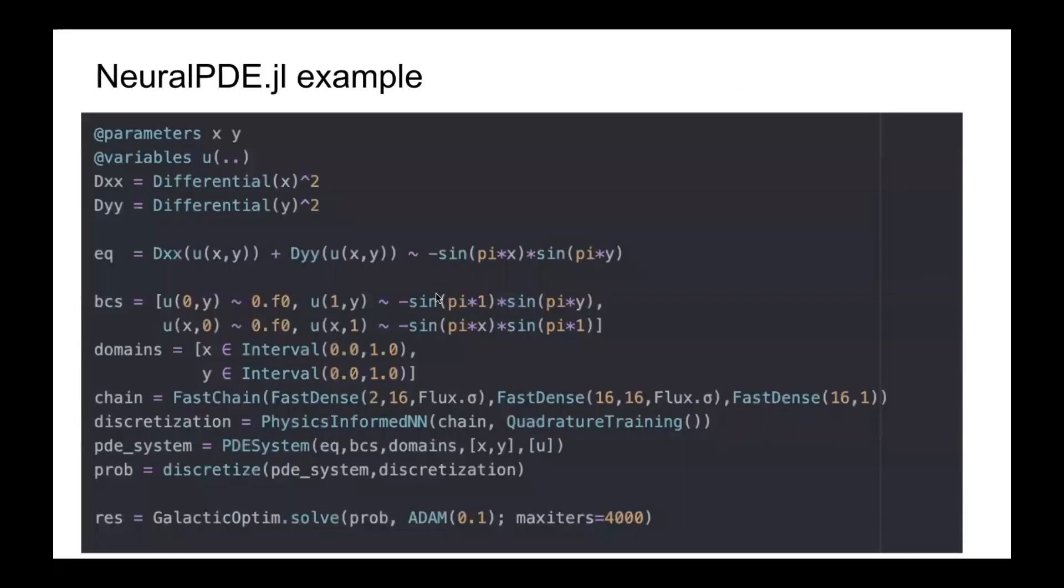Here is an example of solving a Poisson equation where we initialize parameters, variables, and so on, and finally we create the problem and train this with Galactic optimizer.